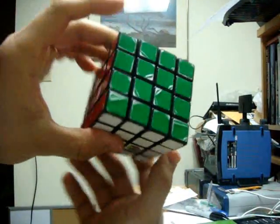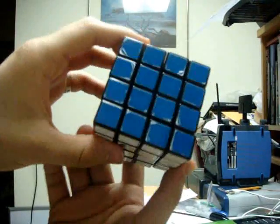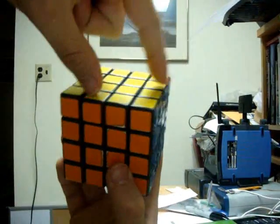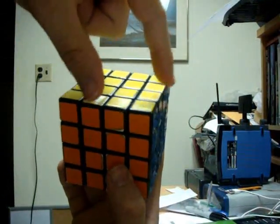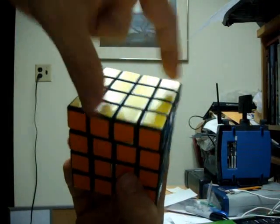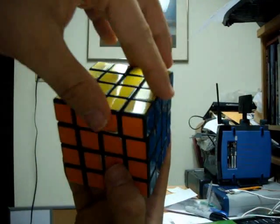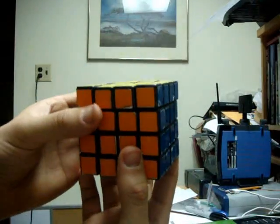Alright guys, so hopefully that helped out a little bit. Basically what we did is that since we had these two edges which were incomplete, we just basically switched these two so that we had three and then we were able to solve it just like a three by three cube.